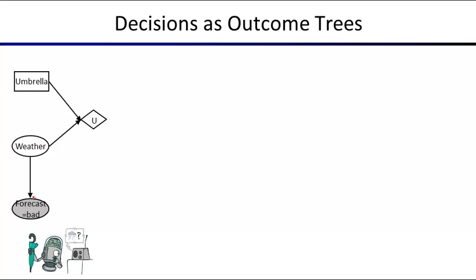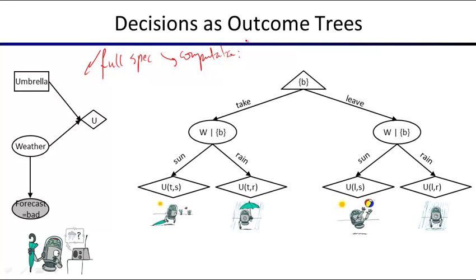Looking at this as an expected max tree: our evidence set is now bad forecast. We still get to choose an action — take or leave. The chance node is over the variable weather but conditioned on knowing the forecast said bad weather, then we could still become sunny or rainy. There are utilities at the very bottom of this tree. It's expected max, annotated in a more detailed way about what evidence is available and what probabilities will be used to compute the chance node probabilities.